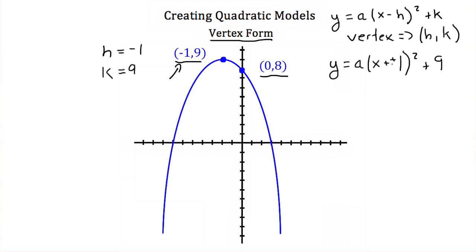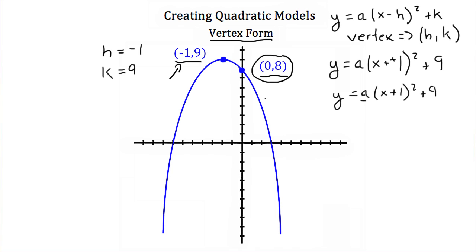Now x minus negative 1 is just x plus 1, so we'll have y is equal to a times x plus 1 squared plus 9. Now we're almost done. We still have this a here that we need to find. So what we're going to do is use this other point that's on our graph and plug that in for x and y.